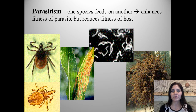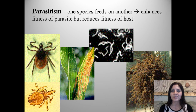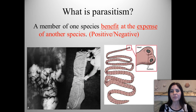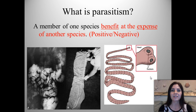In parasitism, one species feeds on another. It enhances the fitness of the parasite but reduces the fitness of the host. For example, a tick or a flea on a dog decreases the fitness of the host while it benefits the parasite. We represent that by a plus-minus sign. This would be an example of a tapeworm that latches onto your intestine and feeds off all the nutrients you intake — pretty nasty.